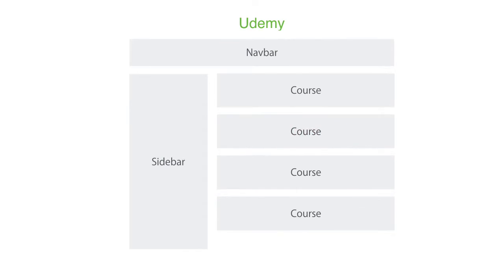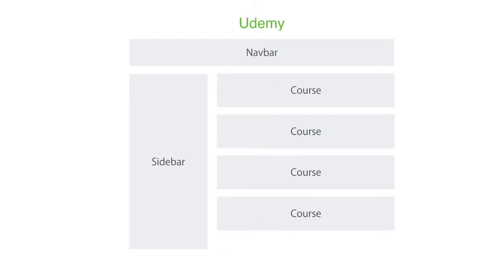Similarly, in the courses component, we want to display one or more courses. Potentially, we can break up this component into smaller components. And to take this to the next level, each course component can include a rating component. Now, we can reuse this rating component in multiple places in the same app, or in an entirely different app. As you see, Angular embraces component-based architecture, which allows us to work on smaller and more maintainable pieces that can also be reused in different places.